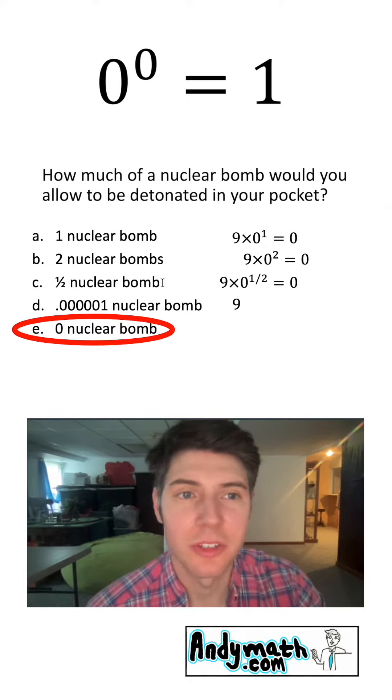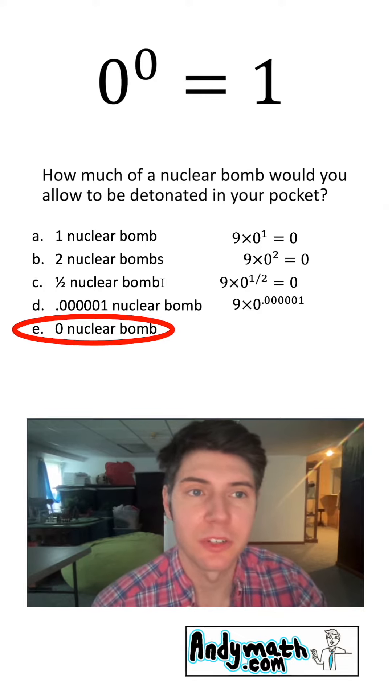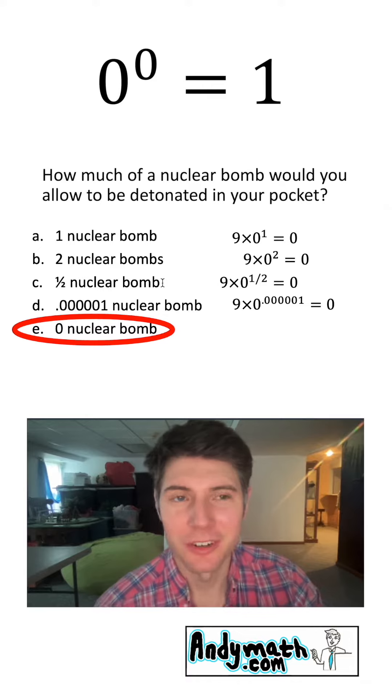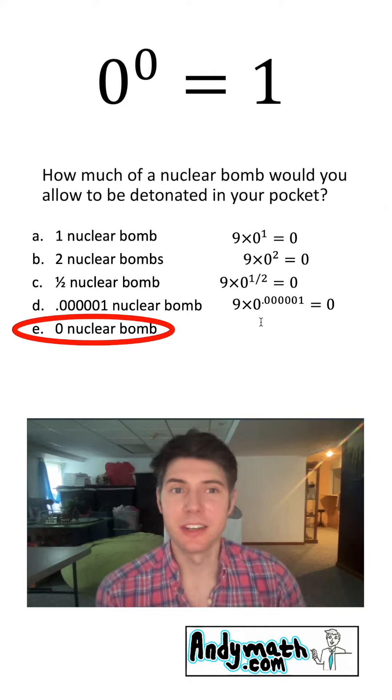What about 0.00001 of a nuclear bomb? Well, that'd be times zero to the 0.00001. That's also equal to zero. So it really doesn't matter how small that zero is that we're multiplying by, it's going to make it zero.